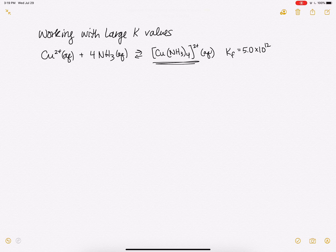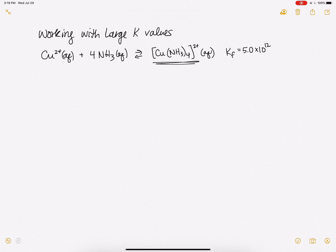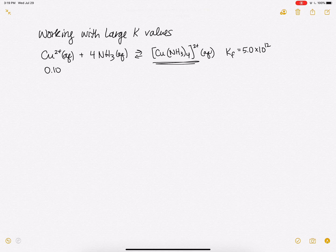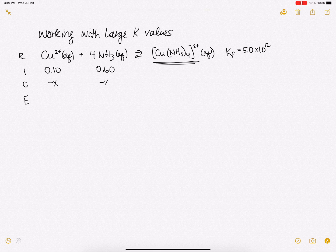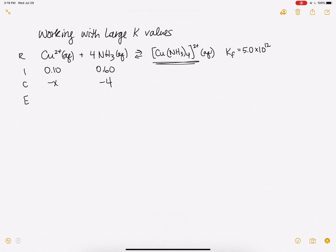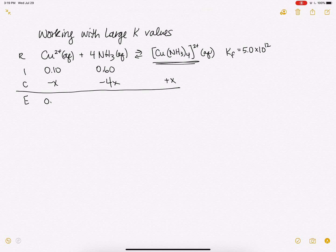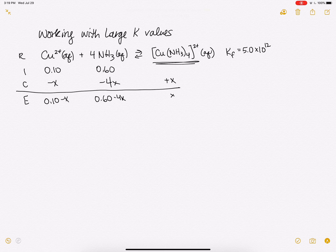So let's imagine that we have 0.1 molar copper and 0.6 molar NH3 at the beginning. So we'll make a little rice table here. We know some of it is going to go forward. So this will be minus X, this will be minus 4X, this will be plus X, and we get 0.1 minus X, 0.6 minus 4X, and X.